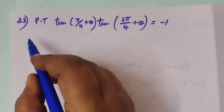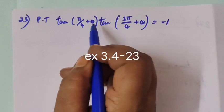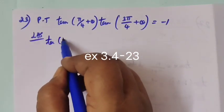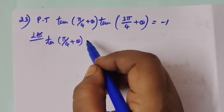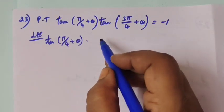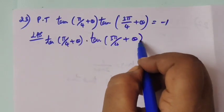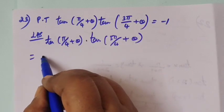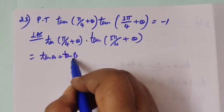Now question number 23: prove that this equals minus 1. Use the tan a plus b formula. Consider LHS: tan of pi by 4 plus theta, into tan of 3pi by 4 plus theta. This equals tan a plus tan b by 1 minus tan a tan b applied to the first factor.